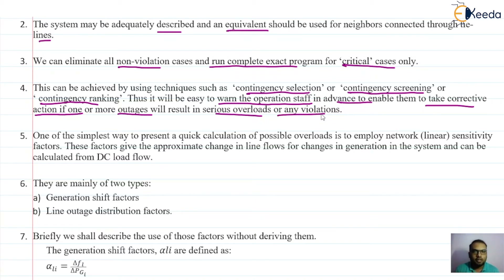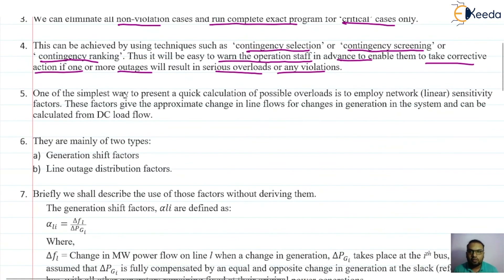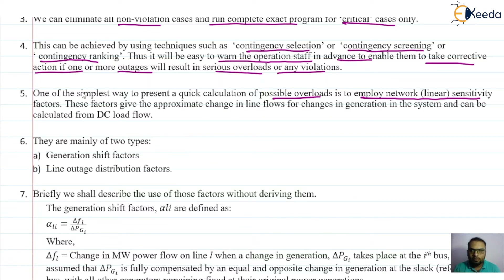If one or more contingencies are going to create serious violations, we can inform the operator well in time so they can take the correct action. One of the simplest ways to present quick calculation of possible overload is to employ the network sensitivity factors. These factors give the approximate changes in the line flow for a change in generation in the system, and can be calculated from the DC load flow.